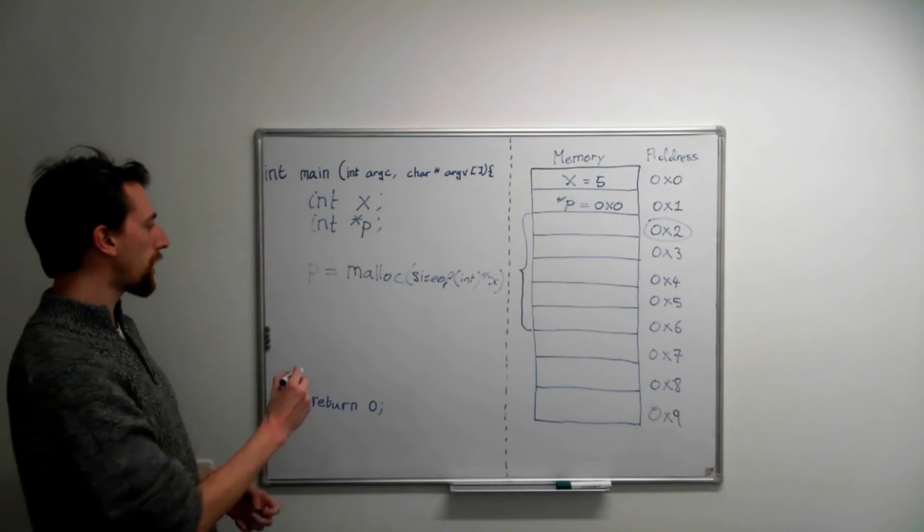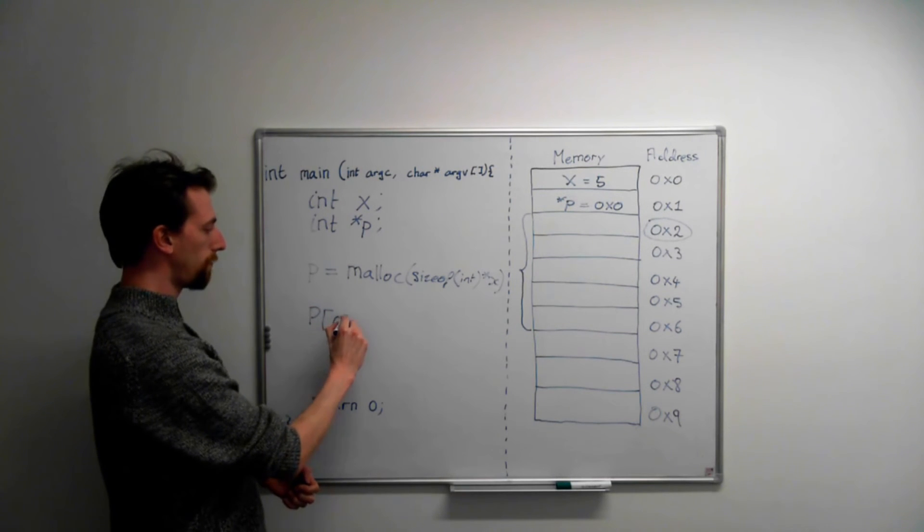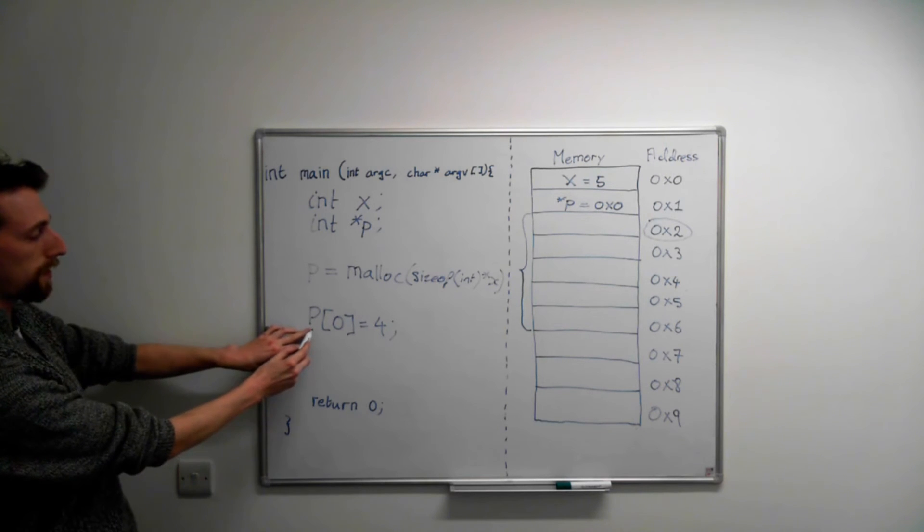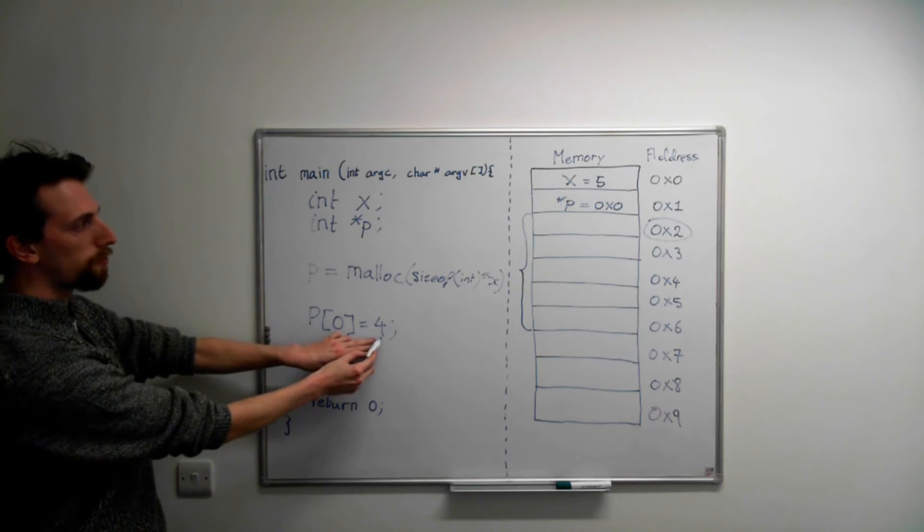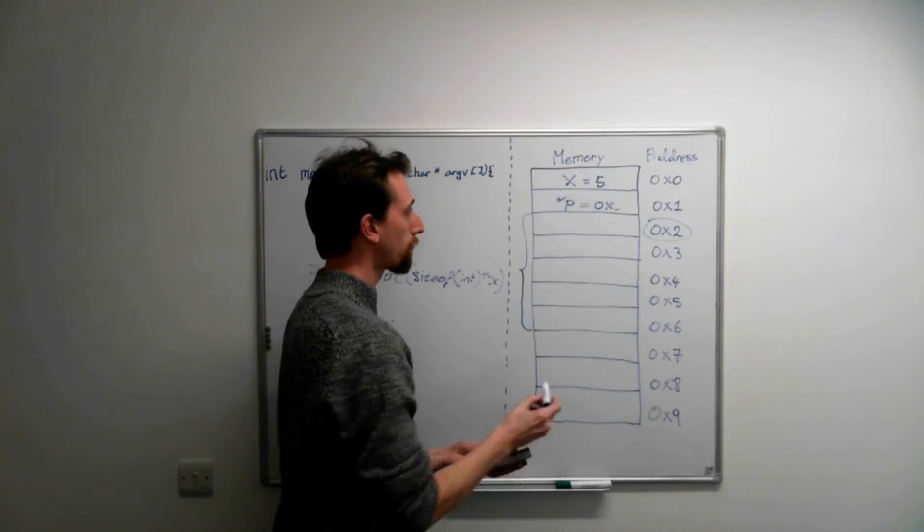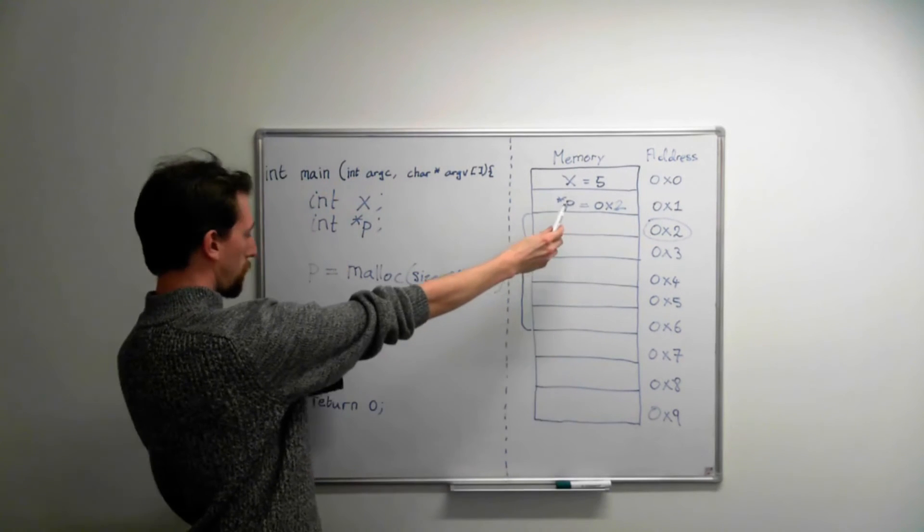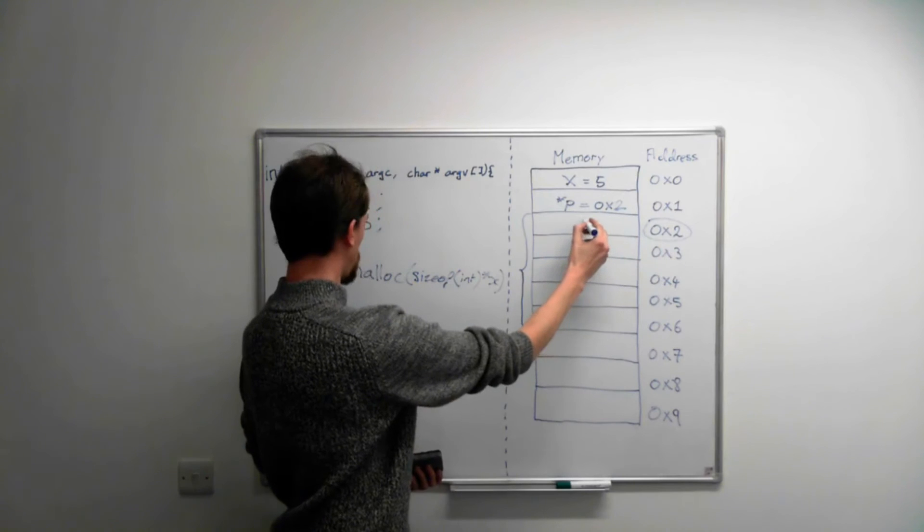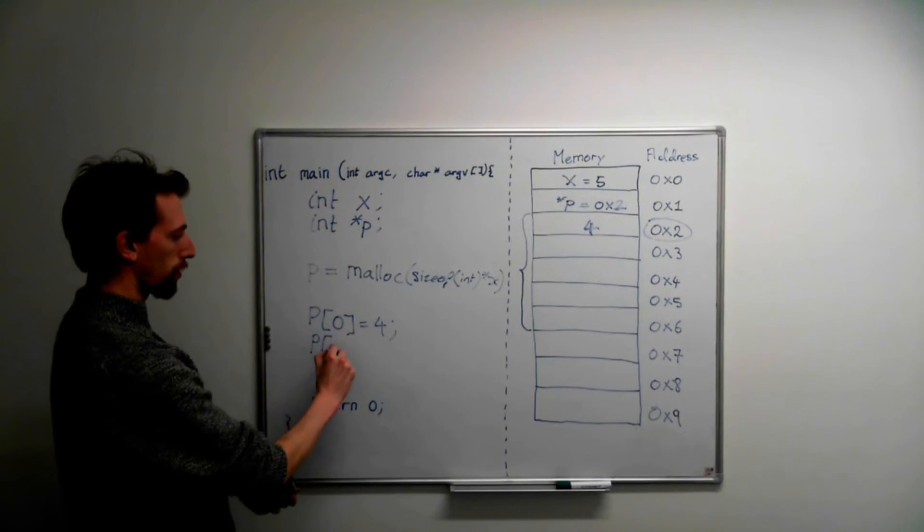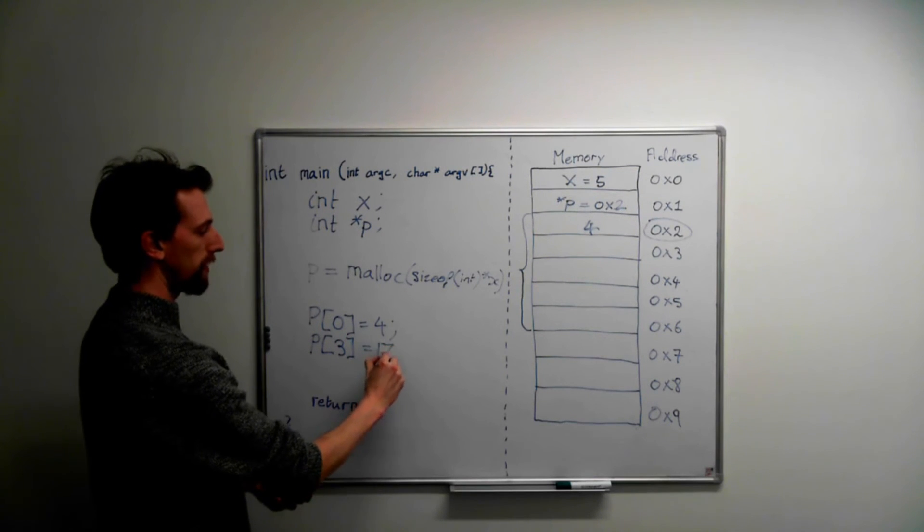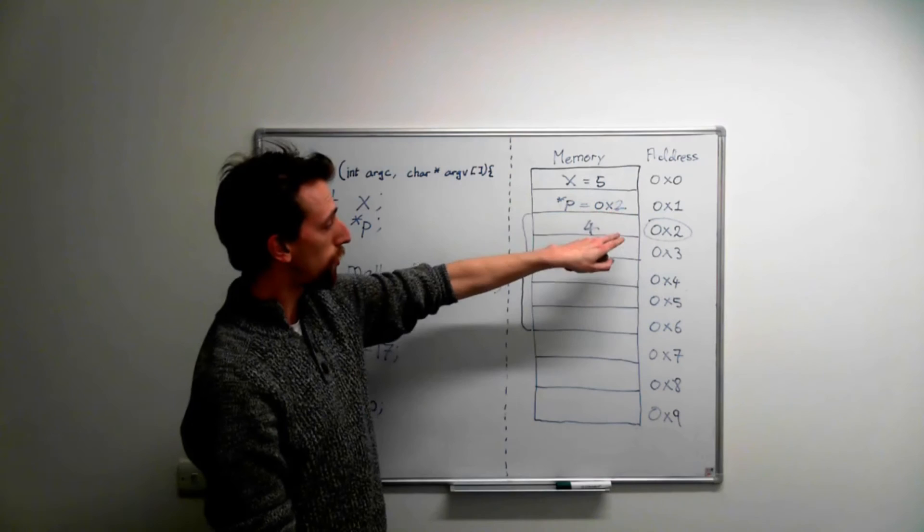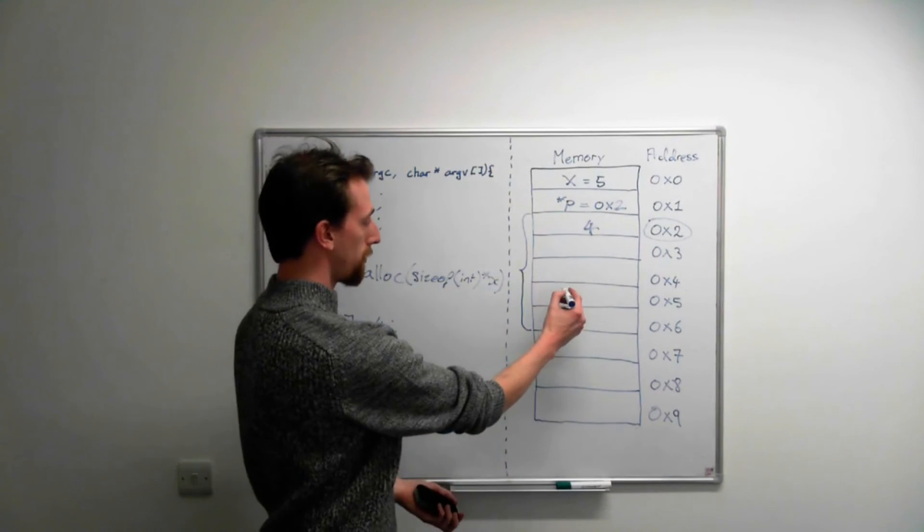So for example, we could say p square bracket 0 equals 4. And what that actually means is take the address in p, add 0 to it, and put the value 4 in there. So the address in p, because malloc returned 2, the address in p is 2. And of course, 2 plus 0 is 2, so in this memory address we store the value 4. We could also say p square bracket 3 equals 17. So this is the value stored in p plus 3 equals 17, which is 2 plus 3 is 0x5, and we put 17 in there.